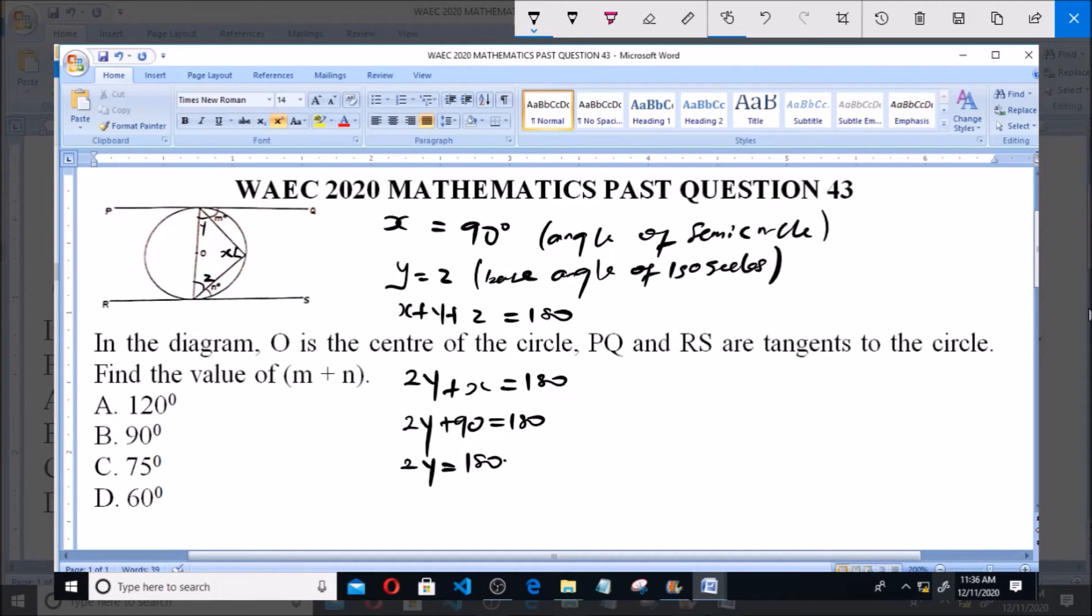2Y will equal 180 minus 90, and 2Y equals 90. So Y equals 45 degrees. And also, since Y equals 45 degrees, Z will equal 45 degrees also.